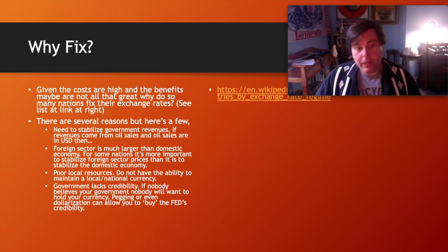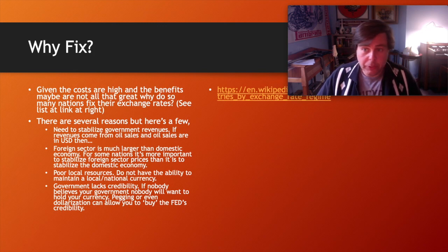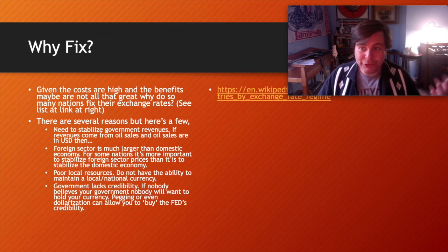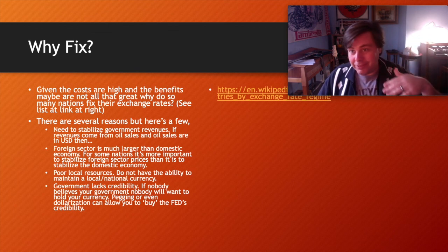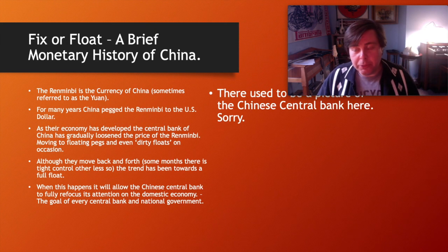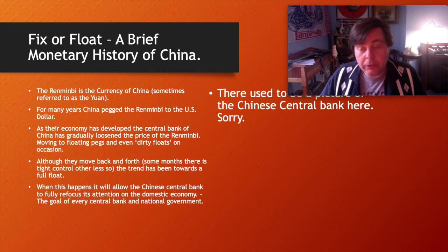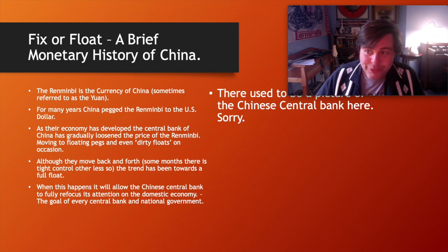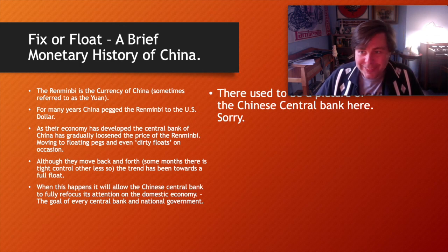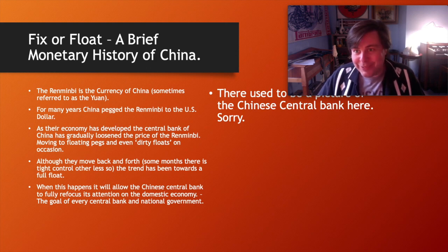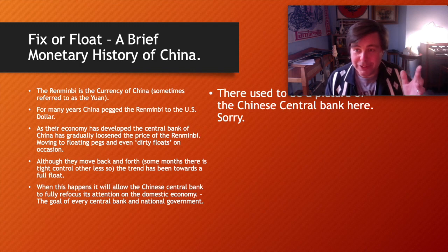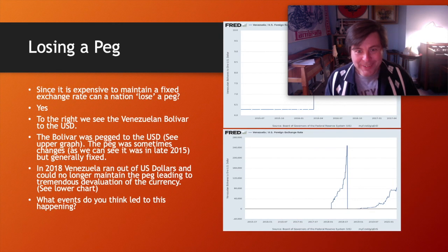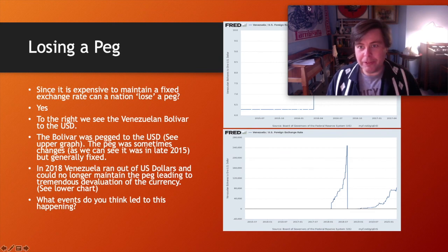Here are some specific real-world examples of why nations use fixed exchange rates, and there's a link to a Wikipedia list of all countries with fixed exchange rates. China's situation is unique: it effectively has two currencies — an internal currency with fixed interest rates and a foreign currency with a managed fixed exchange rate. There's literally no other country that does it quite like China.